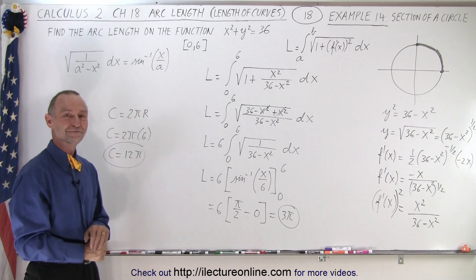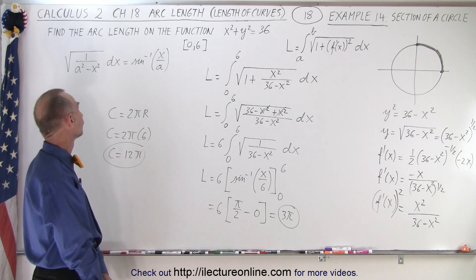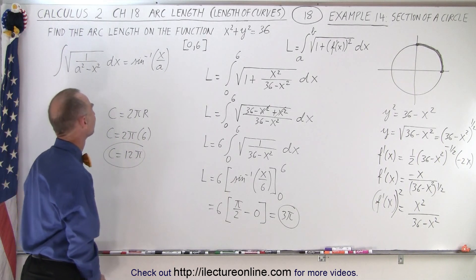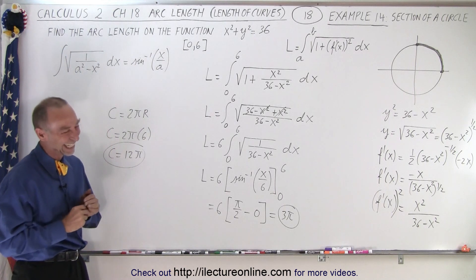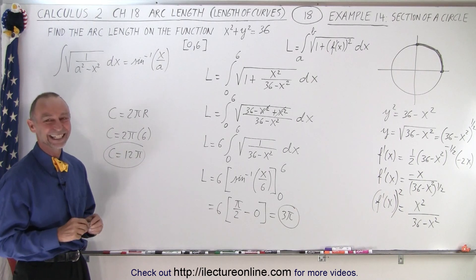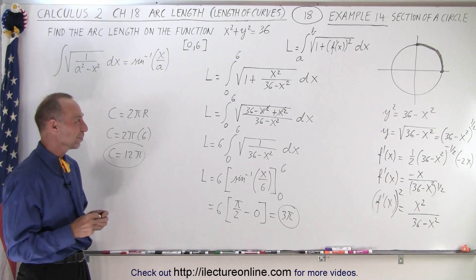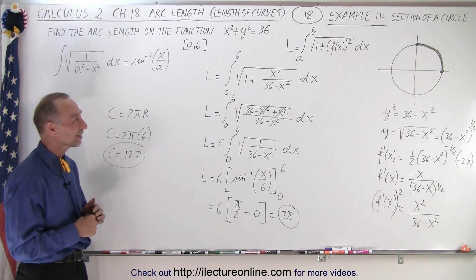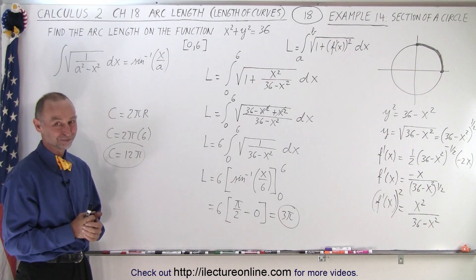And that is how it's done. You can also verify this using R times theta: R is 6, theta is pi over 2, giving 3 pi. You can do it very easily by just taking the radius times the angle in radians. But that way you wouldn't understand how to do arc length using calculus techniques.